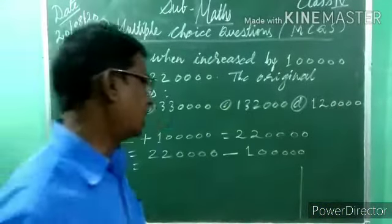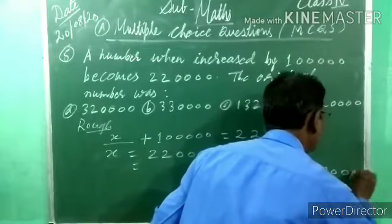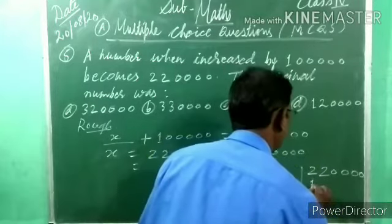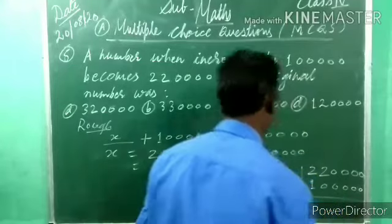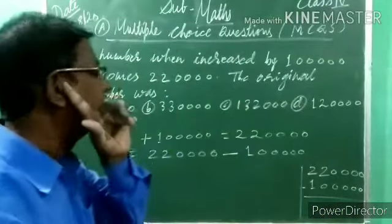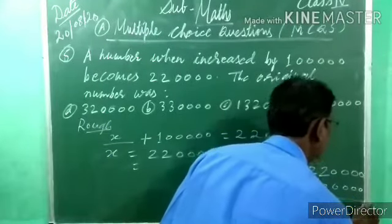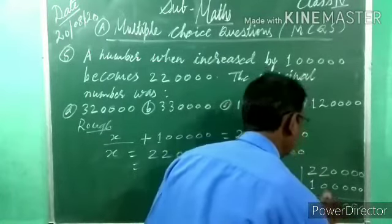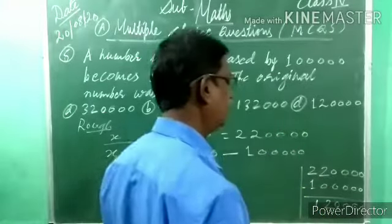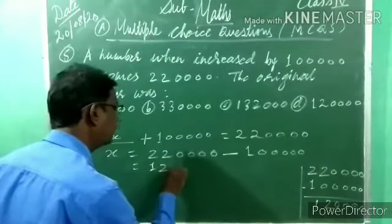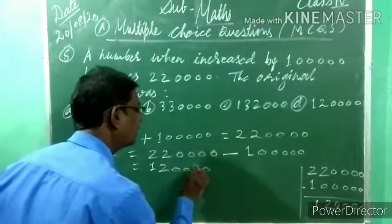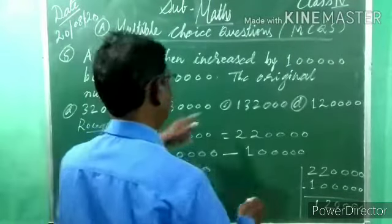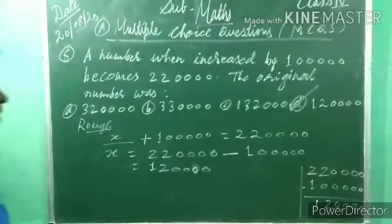Two lakh twenty thousand minus one lakh: zero minus zero is zero; zero minus zero is zero; zero minus zero is zero; zero minus zero is zero; two minus zero is two; two minus one is one. Answer is one lakh twenty thousand (1,20,000). Option D.